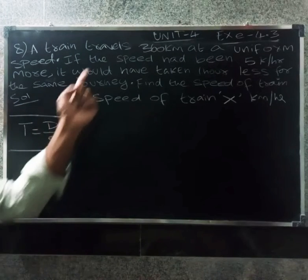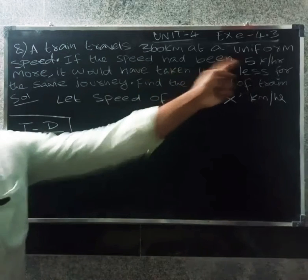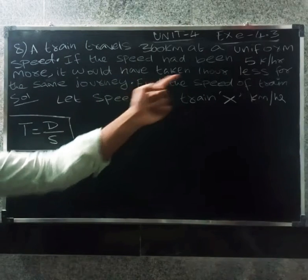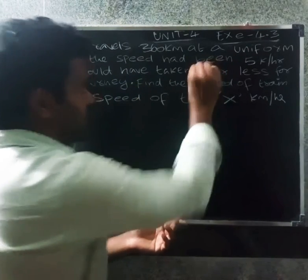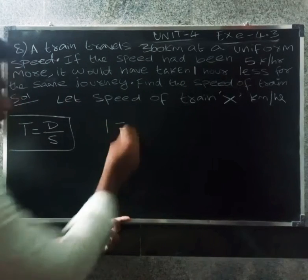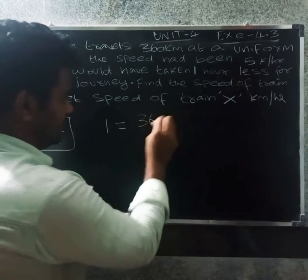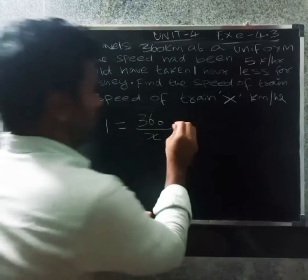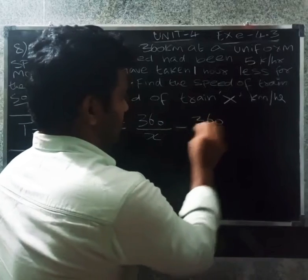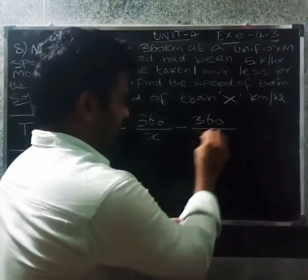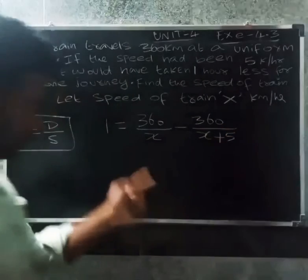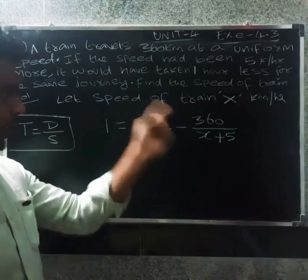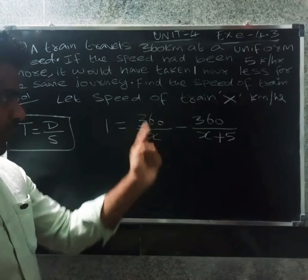If the speed is X plus 5 km per hour, the time equals 360 by X plus 5. The difference in time is 1 hour. The speed of the train is 60 km per hour by this step.